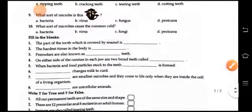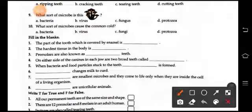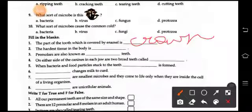Next is fill in the blanks. The part of tooth which is covered by enamel is crown. Okay. The hardest tissue in the body is enamel, tooth enamel children. Enamel is the hardest tissue of the body.